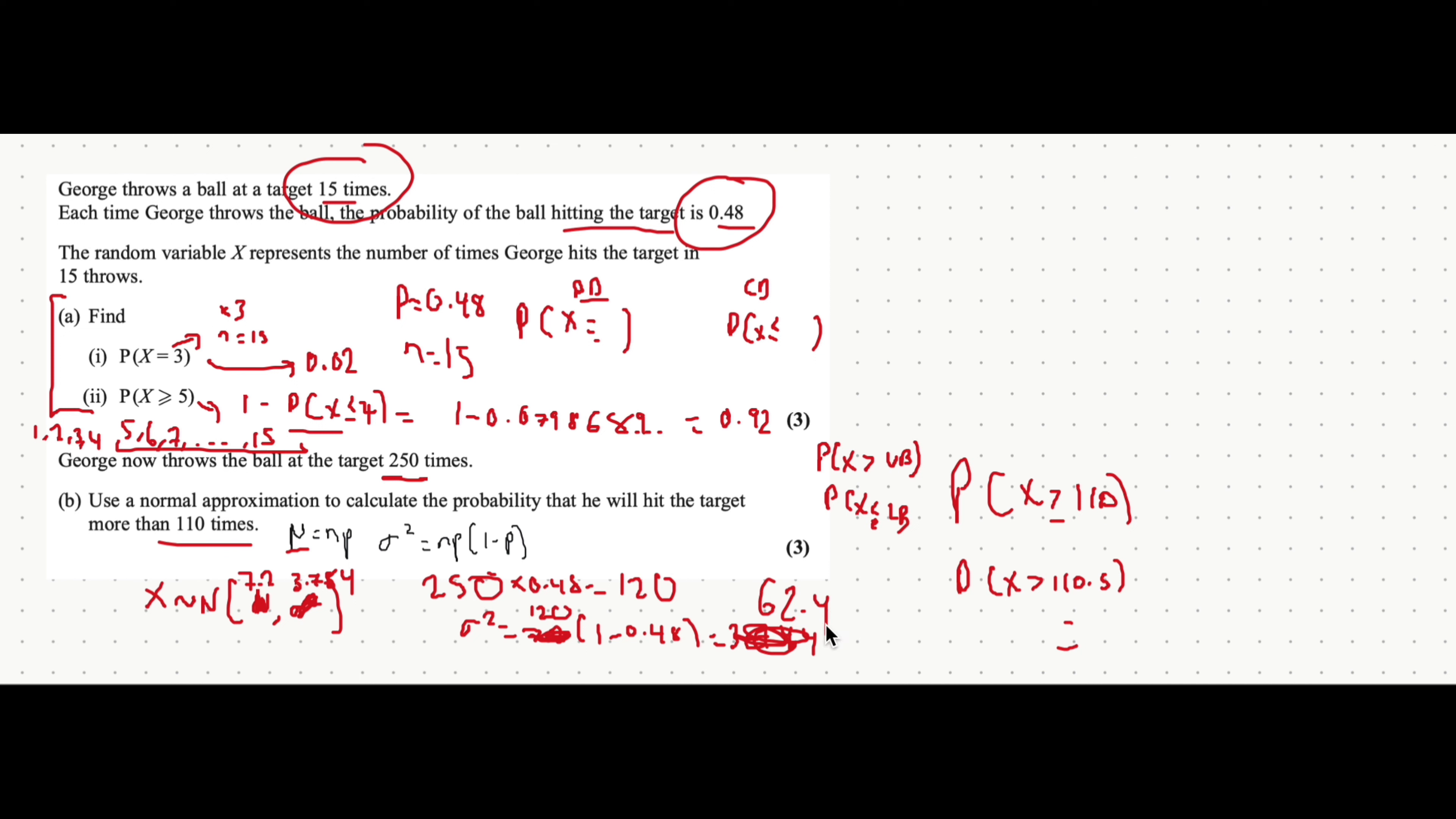We then go back to the normal distribution function. So, normal CD. Our lower is still going to be 110.5. Our upper again is going to be a very large number. So, the standard deviation is going to be, we found that the variance, which is the square of the standard deviation, is 62.4. So, we're going to do the root of 62.4. And then our mean is going to be 120.